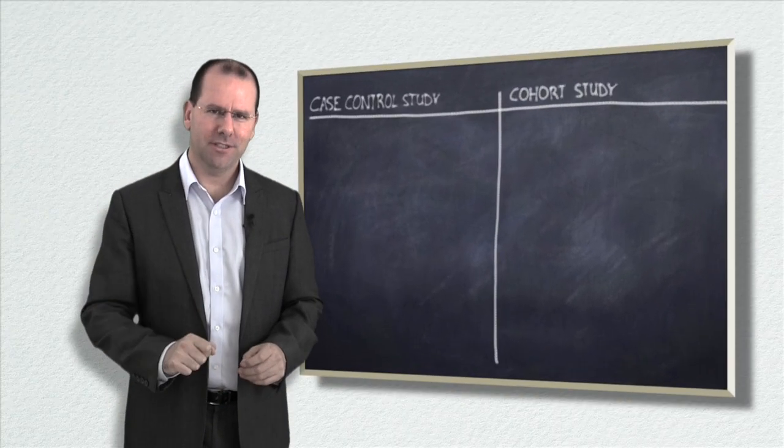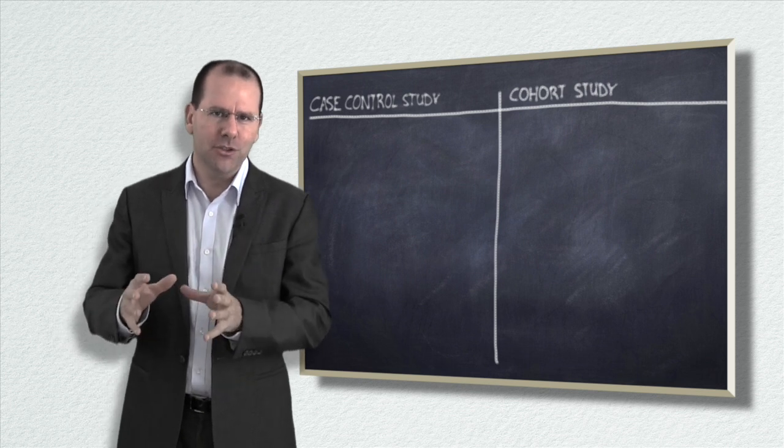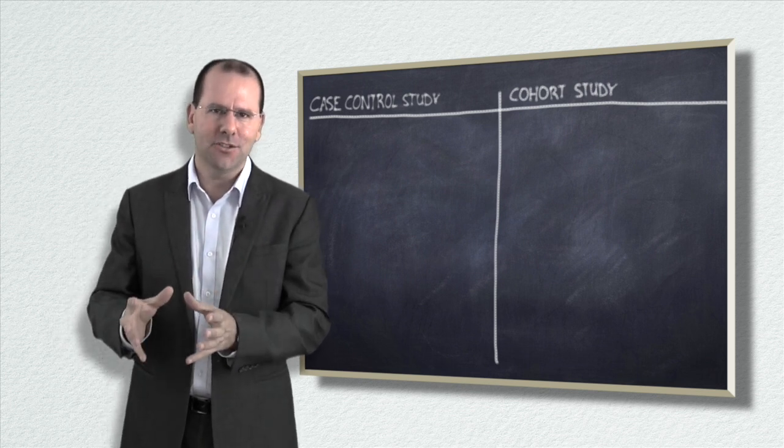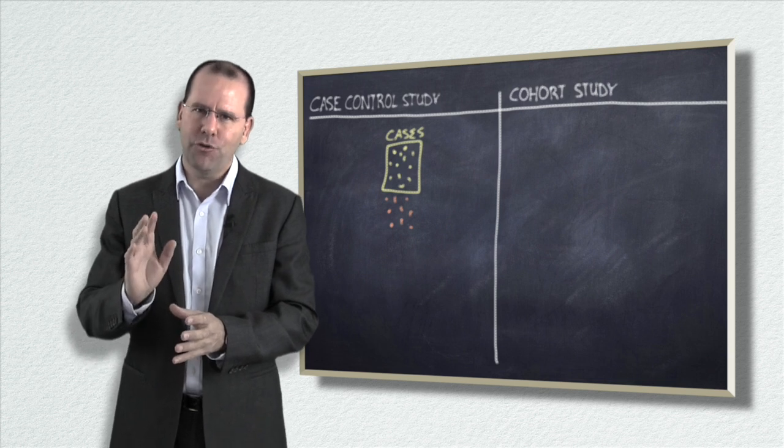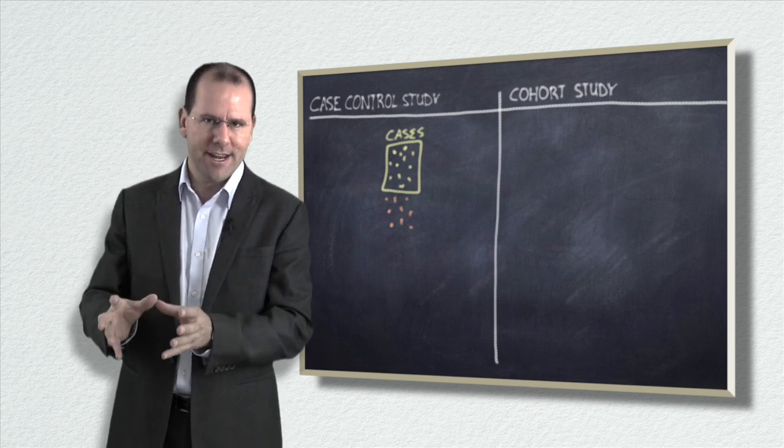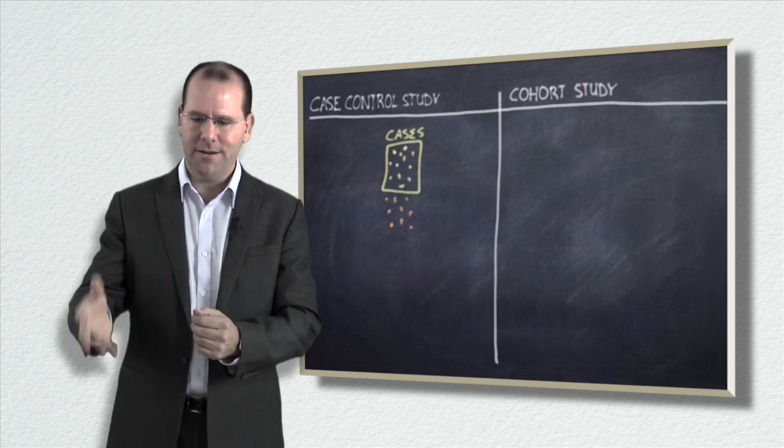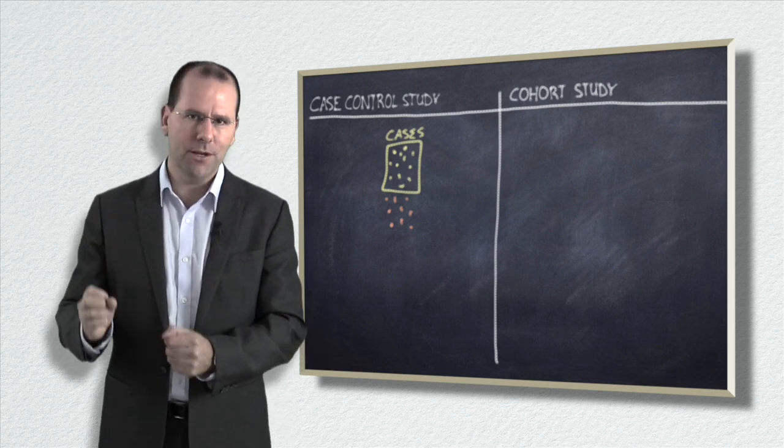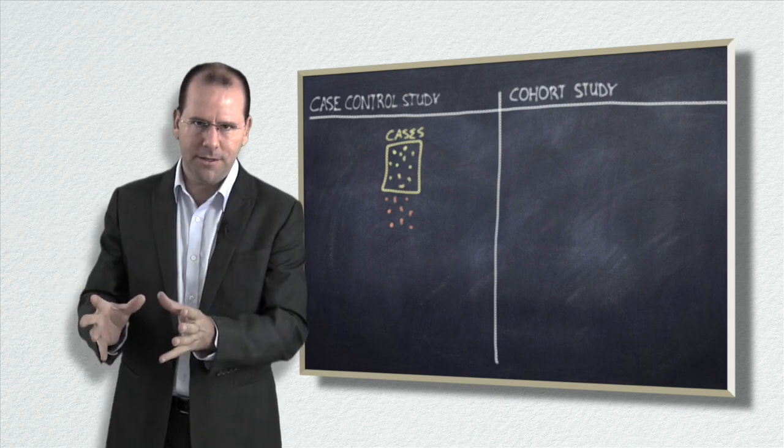Let's start with case control studies. To do a case control study, where you start is with a group of cases, so people that have a particular condition, they've got a disease. And it's a great study if it's a rare condition or rare disease. So you find people that have a disease, let's say for example we found a group of people who at the age of 21 suddenly find their hair goes green.